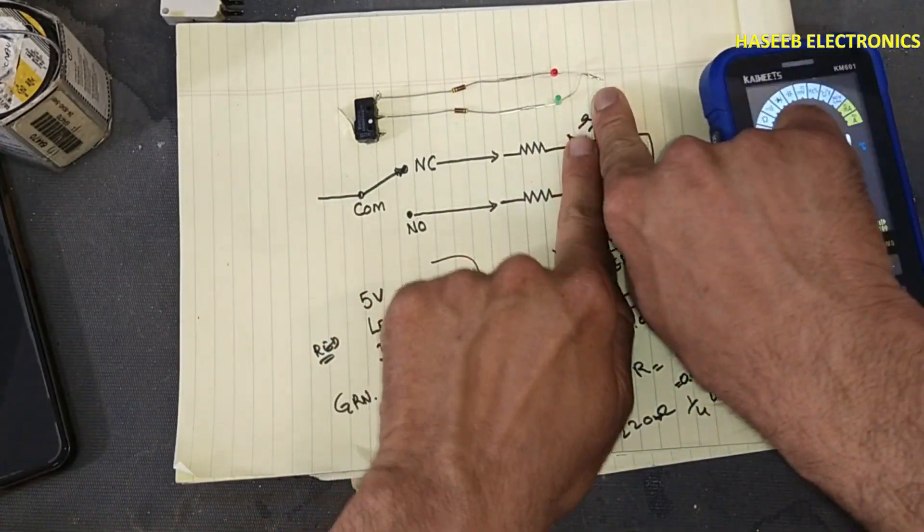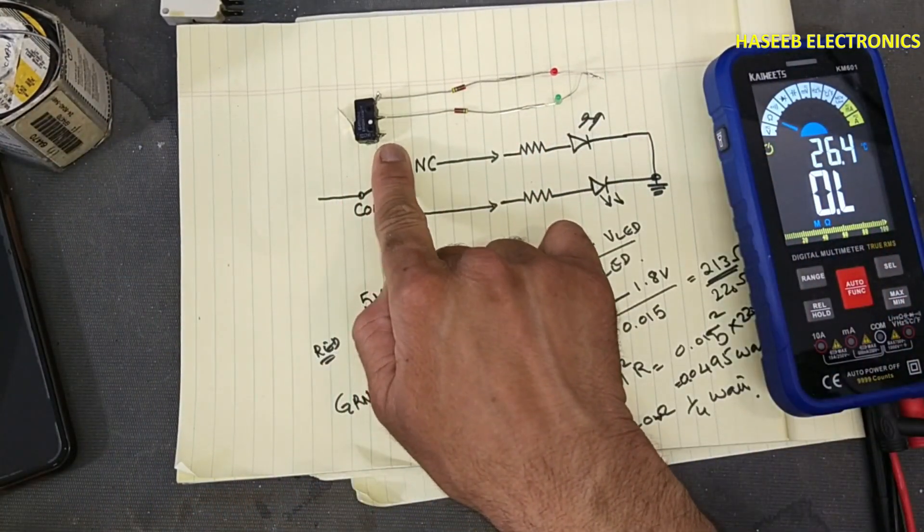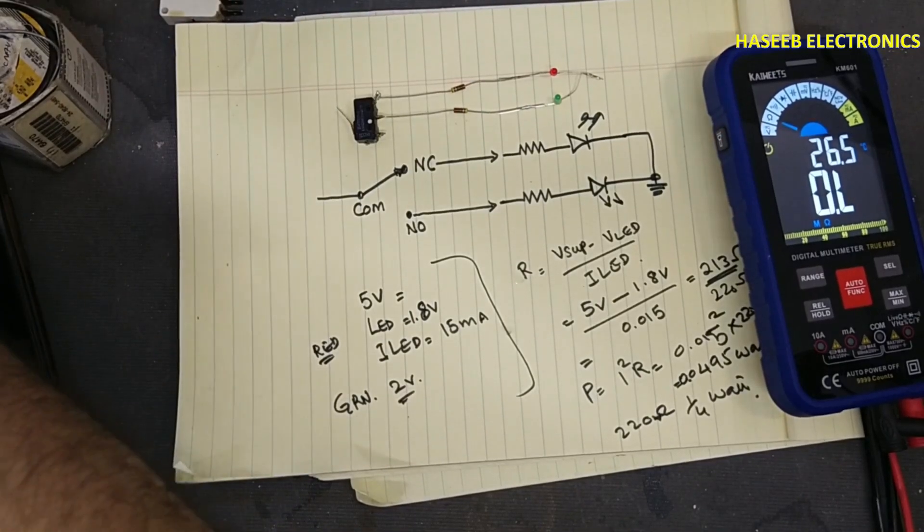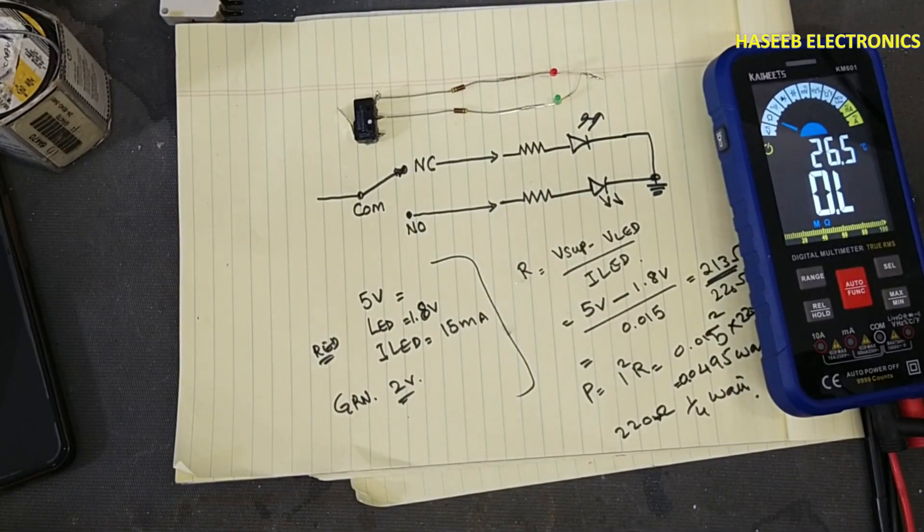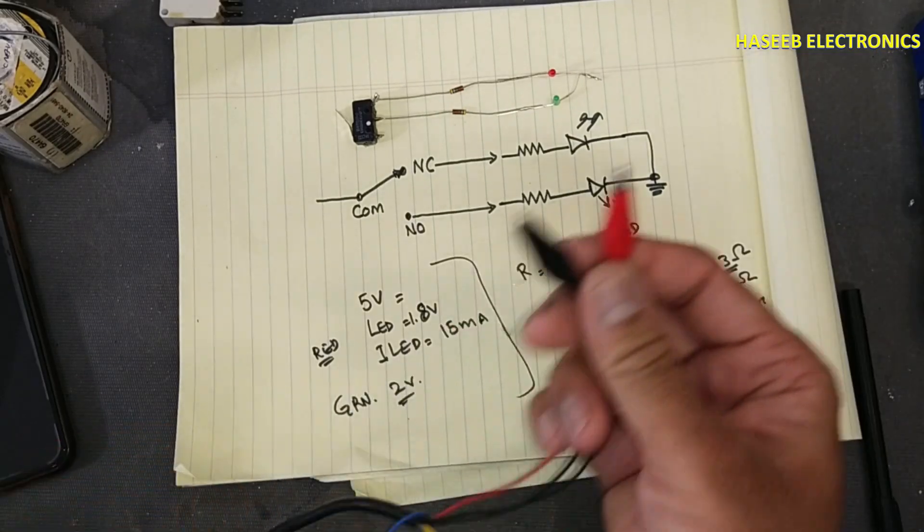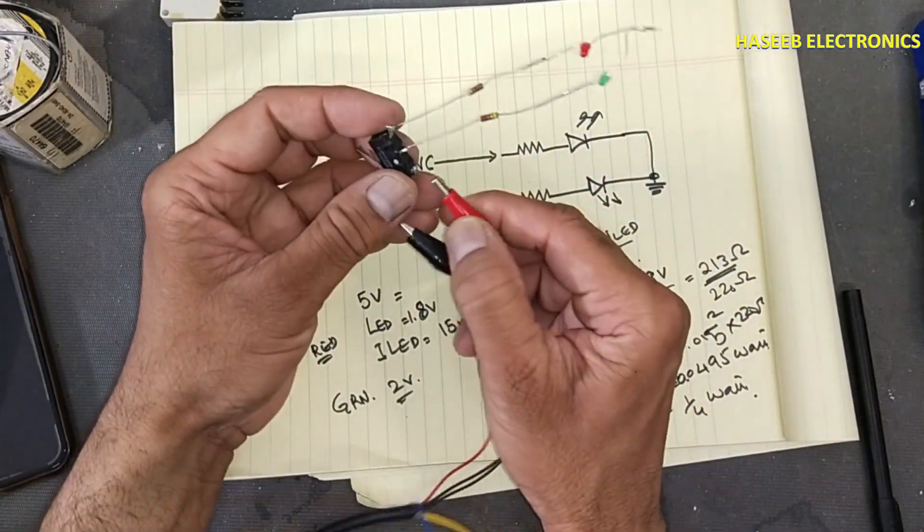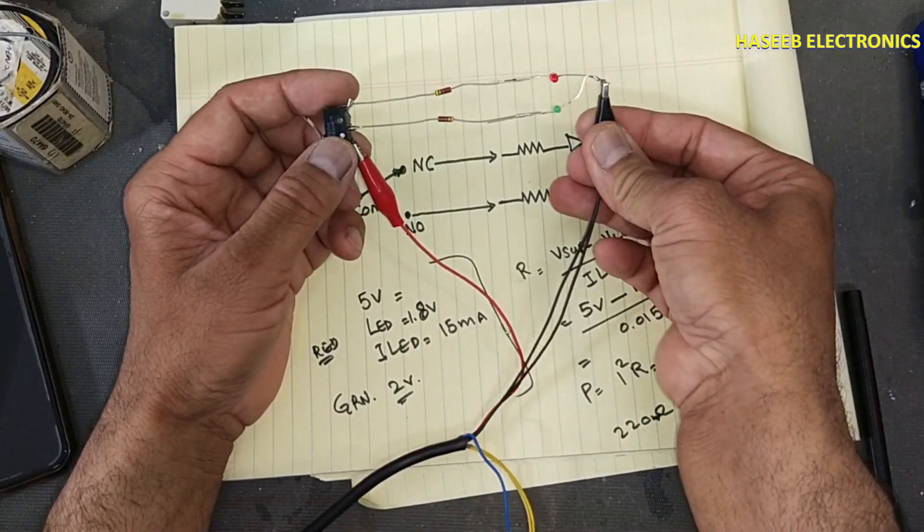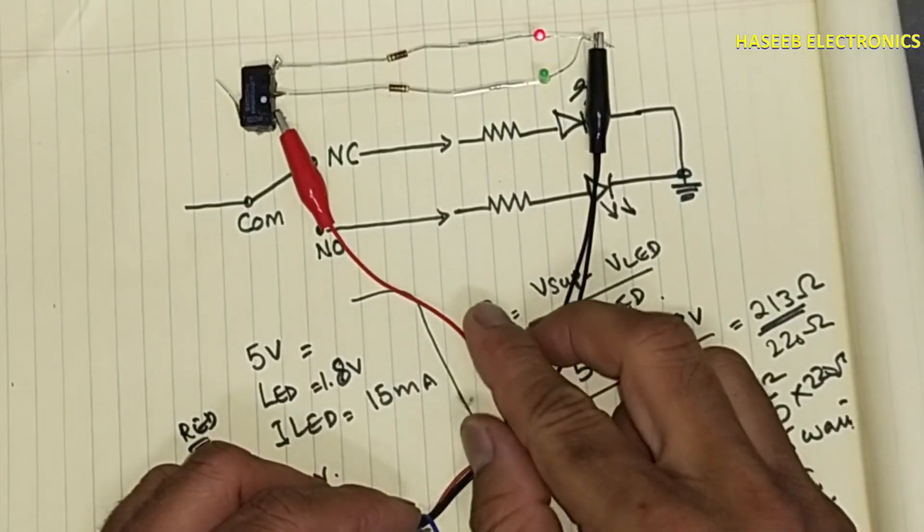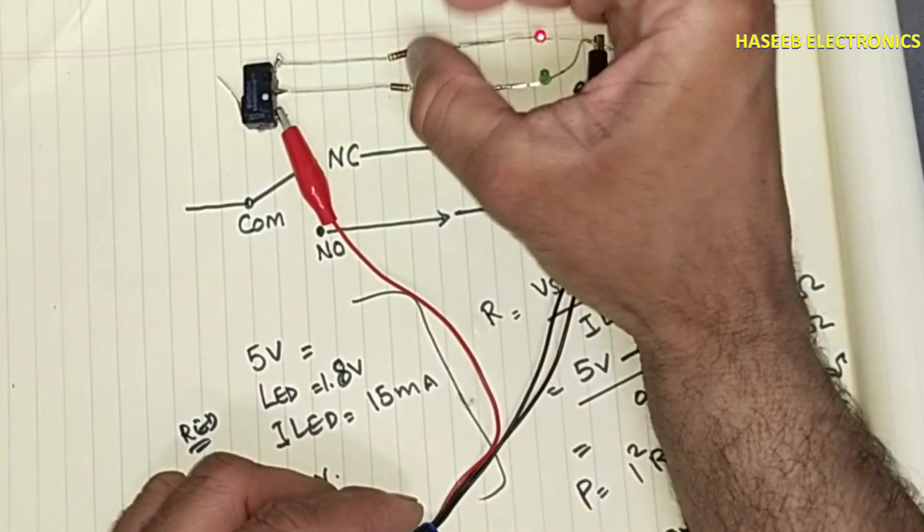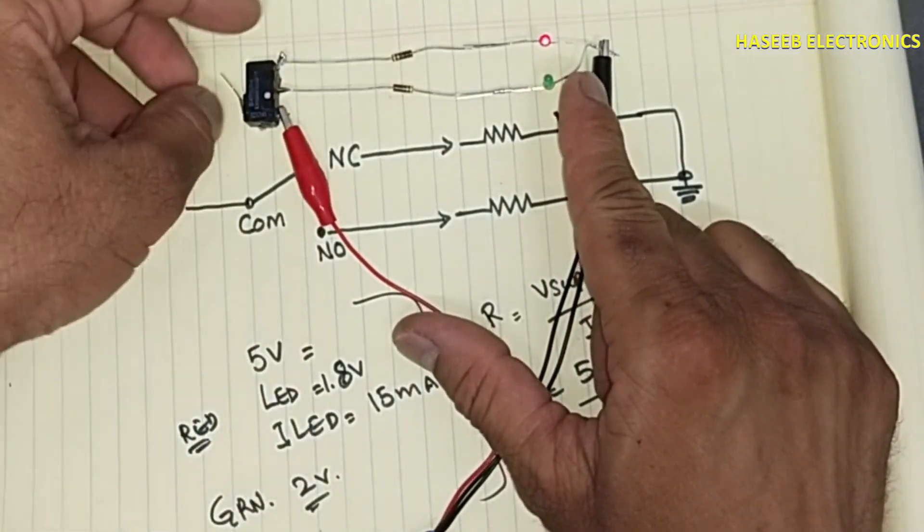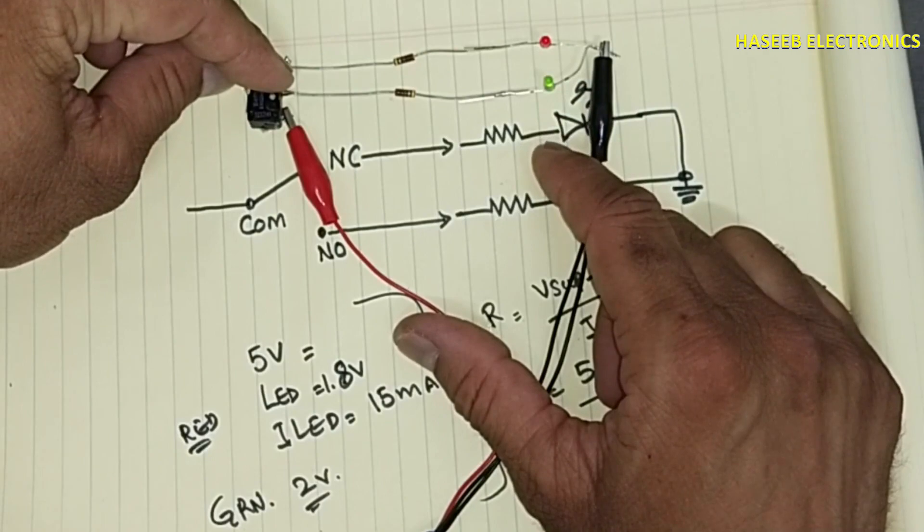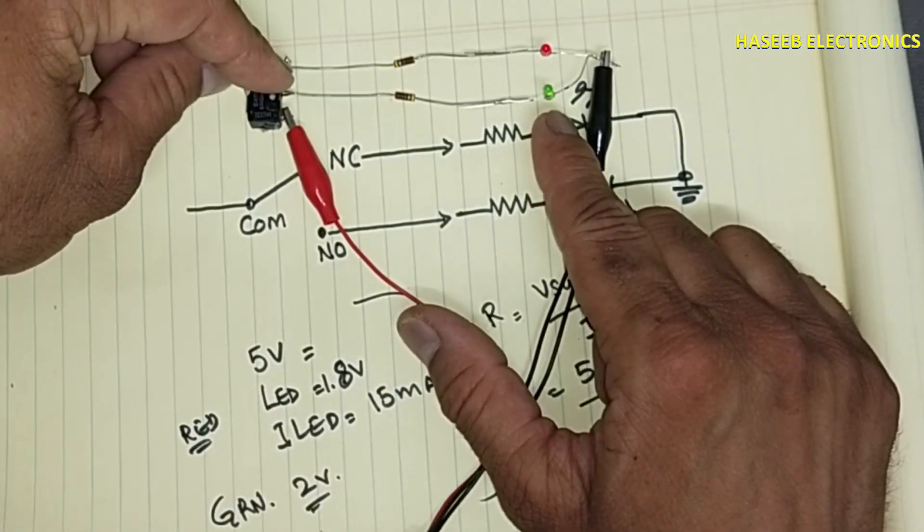Now this end is connected to ground and this end will connect to positive voltage, 5 volt positive. This end is positive, this end is ground. We can see this LED is bright. When it will change, the green LED will indicate.